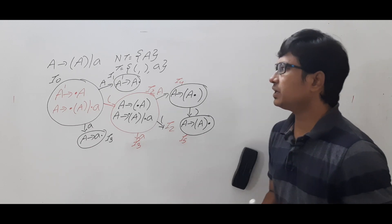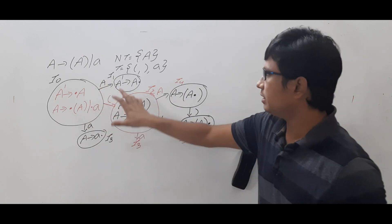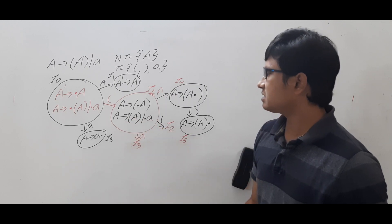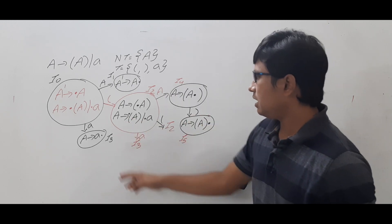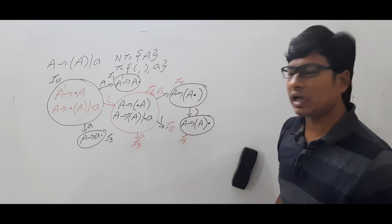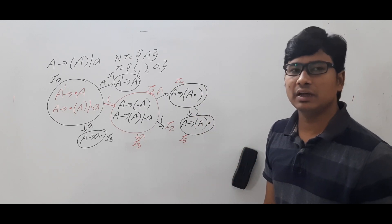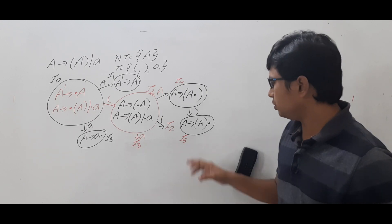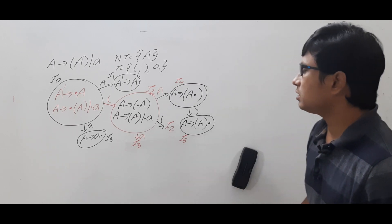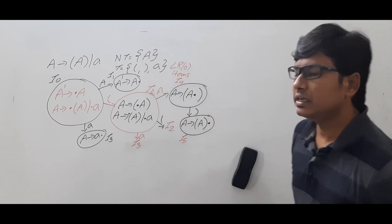To summarize the LR(0) items: from I0 on A → I1, on open braces → I2, on small 'a' → I3. I1 is reduced. From I2 on A → I4, on open braces → I2, on small 'a' → I3. I3 is reduced. From I4 on closed braces → I5. I5 is reduced. So we have six LR(0) items: I0 through I5.